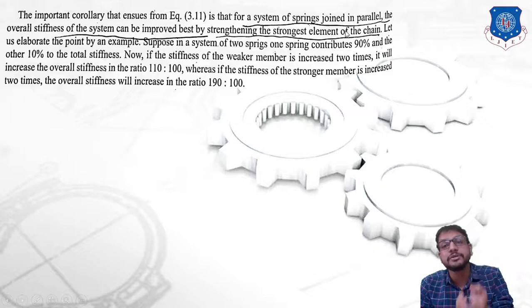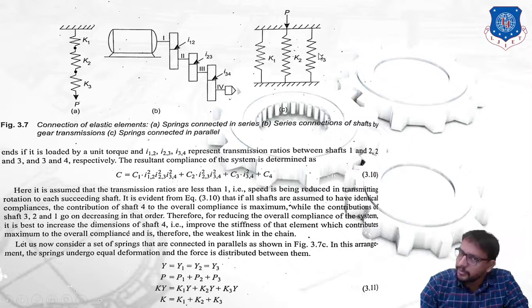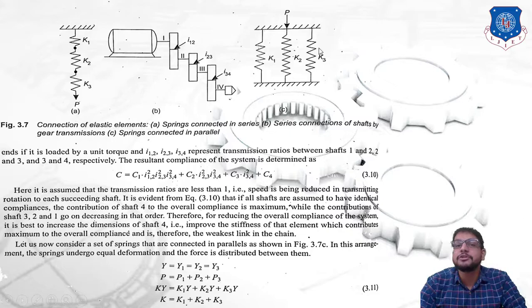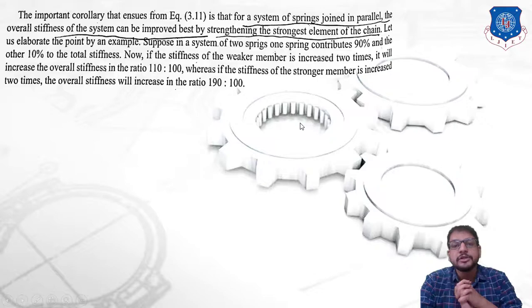So it is preferable to strengthen the spring contributing 90% of total stiffness. For example, if k1 and k2 are weaker compared to k3, and k3 contributes 90%, then k3 is the spring that must be strengthened. In today's session we have covered static stiffness up to this point. In our next session we will start with the next topic — till then, stay tuned and thank you all.